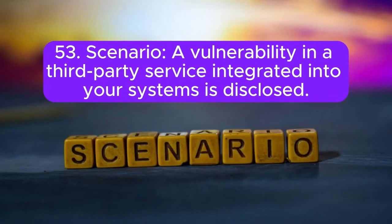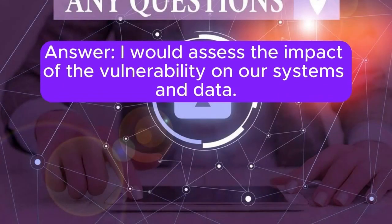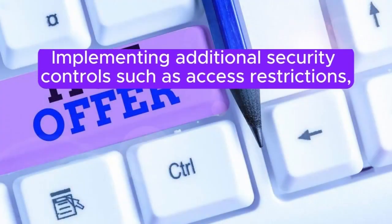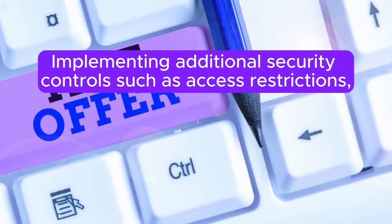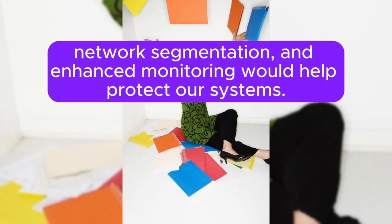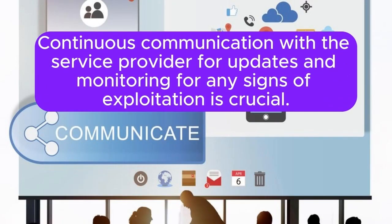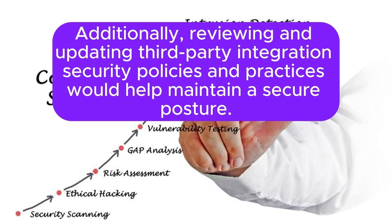Scenario 53: A vulnerability in a third-party service integrated into your systems is disclosed. How do you respond? I would assess the impact of the vulnerability on our systems and data. Coordinating with the third-party service provider, I would apply available patches or recommended mitigations as soon as possible. Implementing additional security controls such as access restrictions, network segmentation, and enhanced monitoring would help protect our systems. Continuous communication with the service provider for updates and monitoring for any signs of exploitation is crucial. Additionally, reviewing and updating third-party integration security policies and practices would help maintain a secure posture.